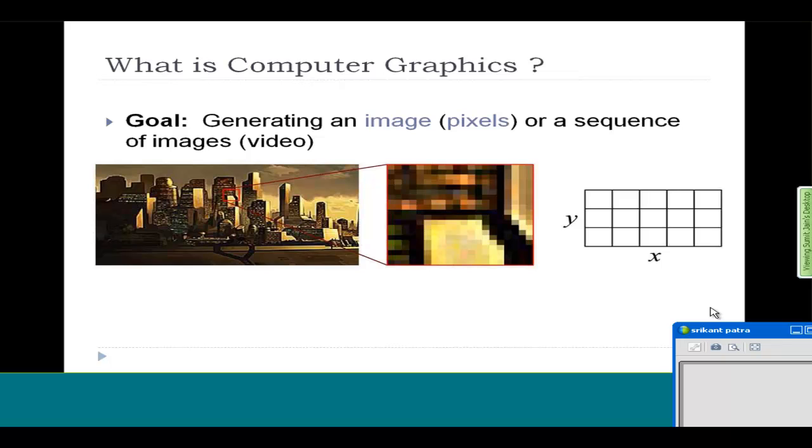All these pixels can be filled with different colors to give rise to whatever kind of image or picture that you want. Basically, an image is represented as a two-dimensional grid of pixels, each filled with different colors. And the goal is to depict or synthesize realism in the scene.